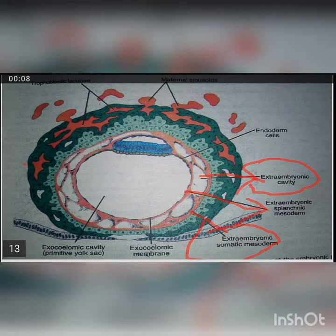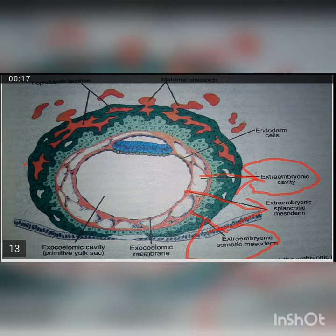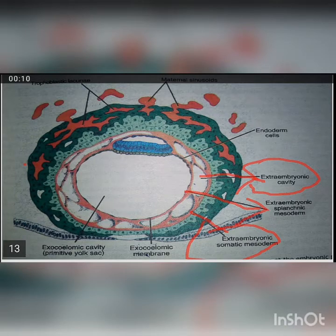Due to formation of this chorionic cavity, the extraembryonic mesoderm is split into two layers: the somatic mesoderm, which covers the amnion, and the splanchnic mesoderm, which covers the primary yolk sac. The amnion is actually the upper dome-shaped part of the amniotic cavity, adjacent to the cytotrophoblast.